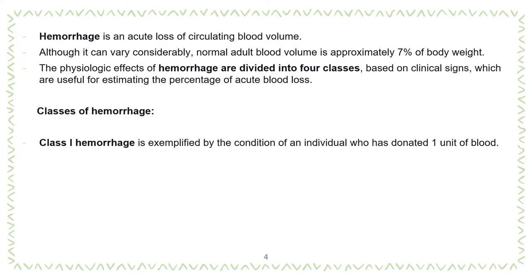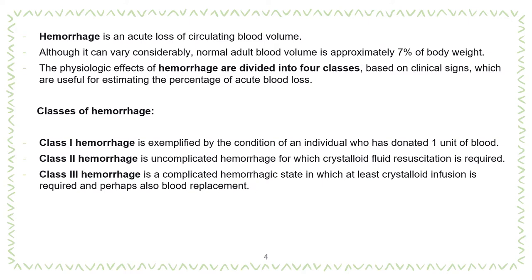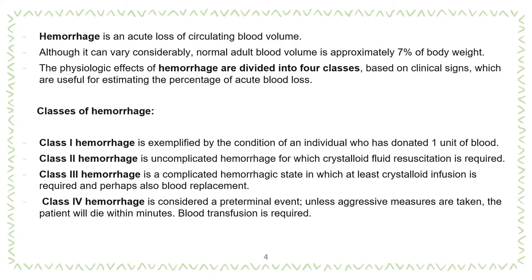Classes of hemorrhage. Class one is exemplified by the condition of an individual who has donated one unit of blood. Class two is uncomplicated hemorrhage for which crystalloid fluid resuscitation is required. Class three is a complicated hemorrhage state in which at least crystalloid infusion is required and perhaps also blood replacement. Class four hemorrhage is considered a preterminal event — unless aggressive measures are taken, the patient will die within minutes and blood transfusion is required.